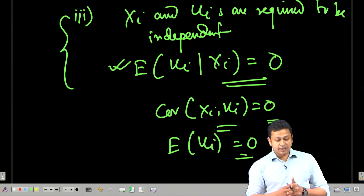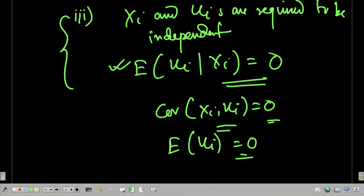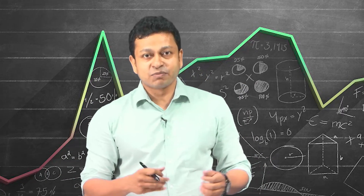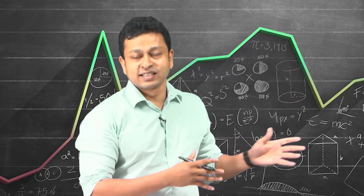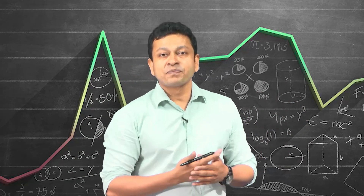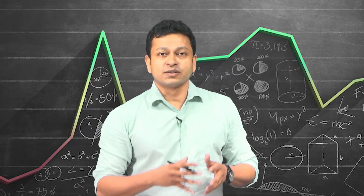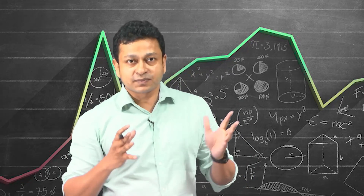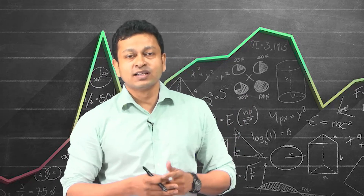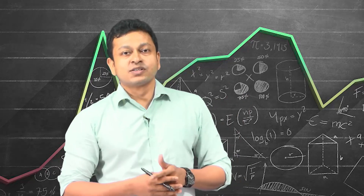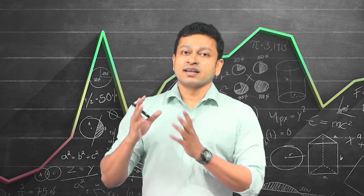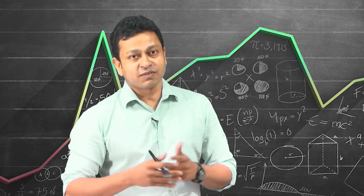With this we will end the lecture on stochastic regressors. In the next lecture we are going to talk about the assumptions we have been dealing with across all the past lectures in the second module. All the exercises we have done will culminate to some assumptions, and we will talk about all the assumptions — for stochastic and non-stochastic regressors — in one go in the next couple of lectures. Thank you.